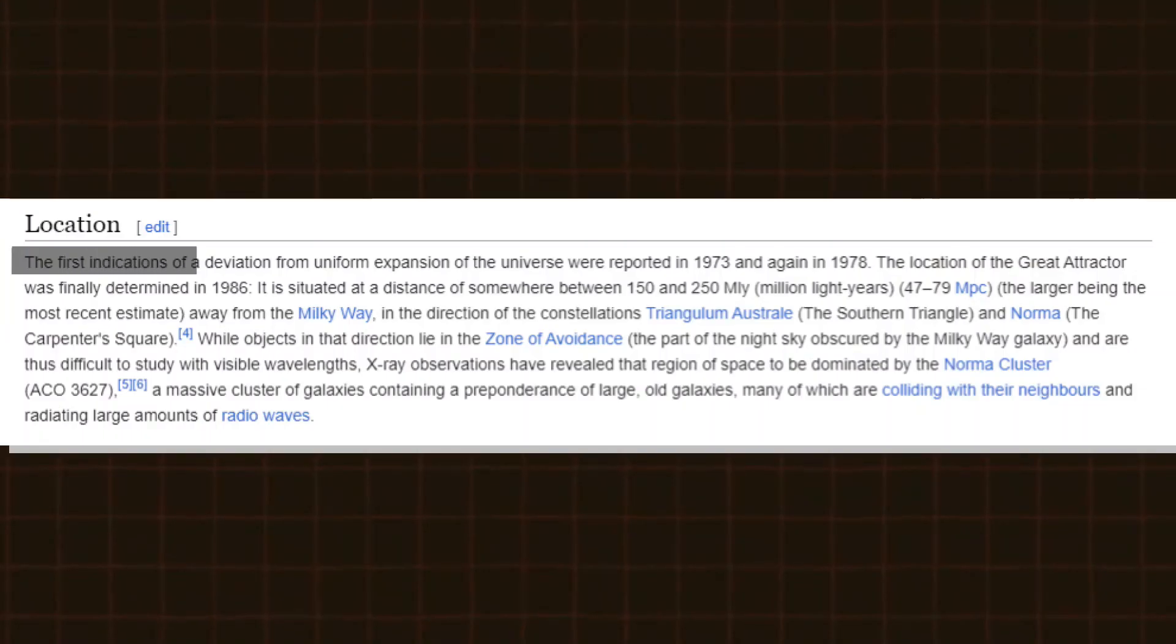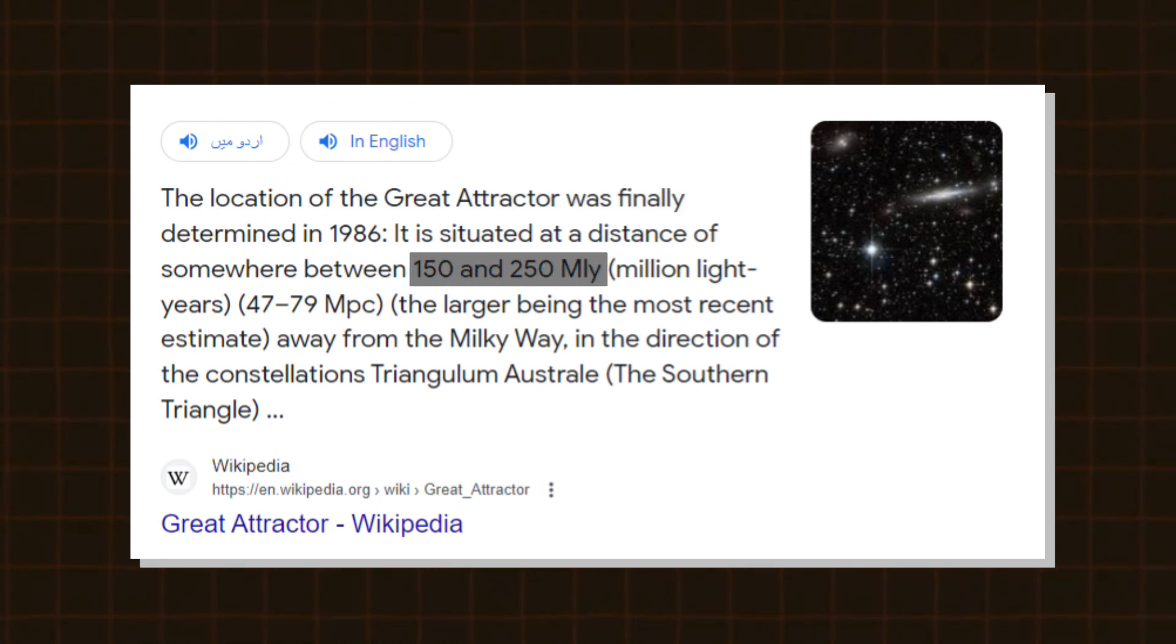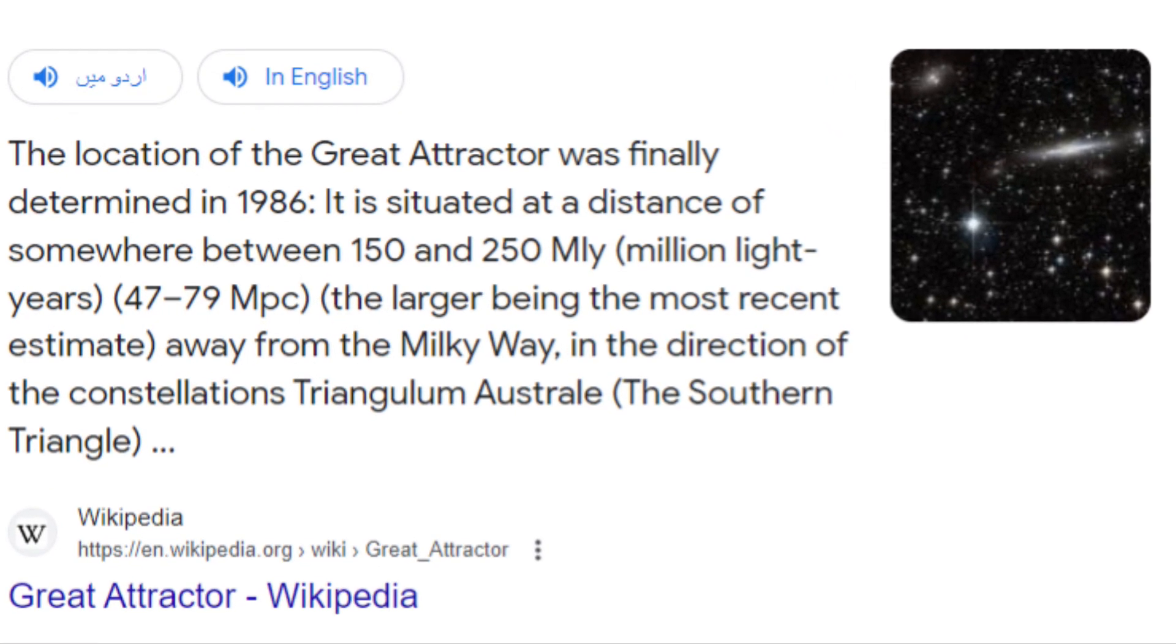The initial indications of a deviation from the uniform expansion of the universe were reported in 1973 and again in 1978. By 1986, the location of the Great Attractor was finally determined. It is situated at a distance that ranges between 150 and 250 million light-years away from the Milky Way. Here, 250 million light-years is the recent estimate. It is located in the direction of Triangulum Austral, or the Southern Triangle, and Norma, or the Carpenter's Square.